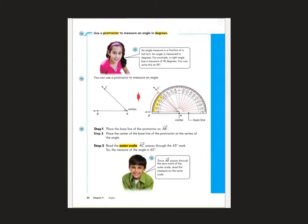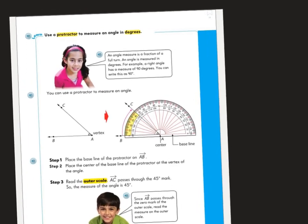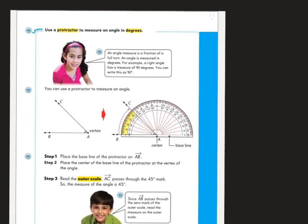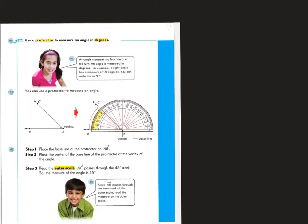The first thing you should know about a protractor is that it's the tool we use to measure an angle. An angle is measured using a unit of measurement called degrees. An angle measure is a fraction of a full turn. An angle is measured in degrees. For example, a right angle has a measure of 90 degrees. You can write this as 90 with the degree symbol. When it says an angle measure is a fraction of a full turn, what that basically means is talking about a circle.